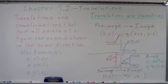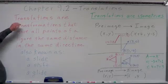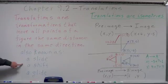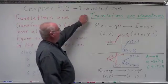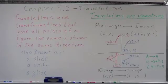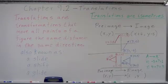Now let's look at translations. Translations are transformations that move all points of a figure the same distance in the same direction. They're also known as slides, shifts, or glides. Translations are isometries — they maintain betweenness of points, collinearity, angle measurement, and distance measurement, which means they maintain the same shape and size. The points are not going to be twisted, and the lines are going to be relative to each other in the same positions.